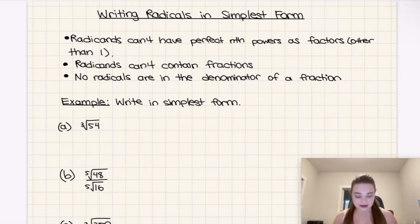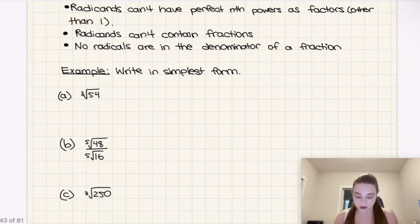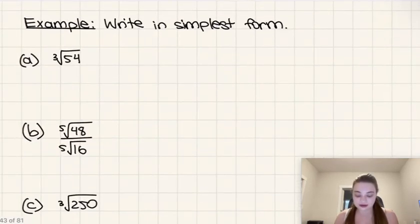Okay, so let's write these in simplest form. So this one here is not a fraction, nor is there even a denominator other than one here. So the only possible thing that could be wrong with (a) is that there could be a factor of 54 that is a perfect cube. So what are the perfect cubes?